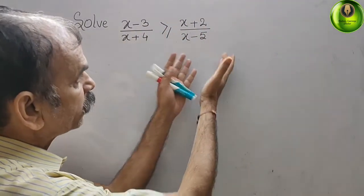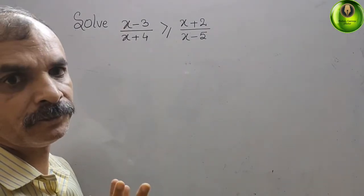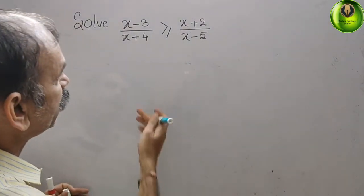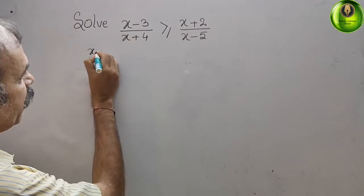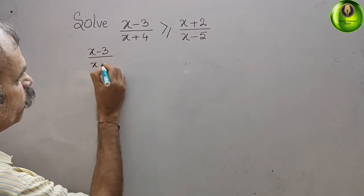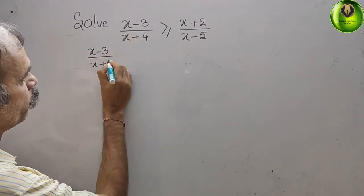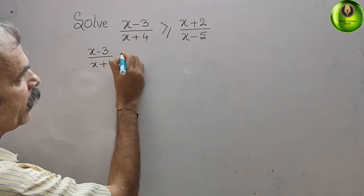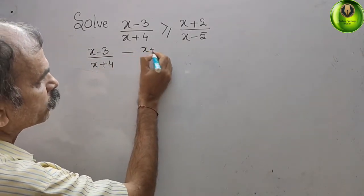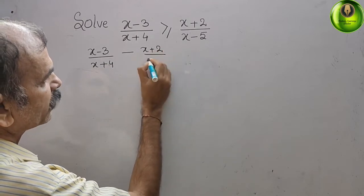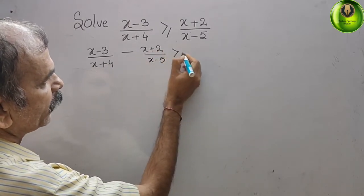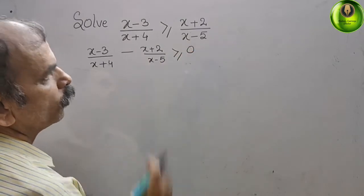Bring everything to your left side first. So what we will get: (x minus 3) by (x plus 4) minus (x plus 2) by (x minus 5), greater than or equal to 0.